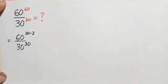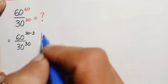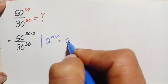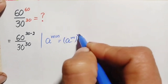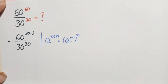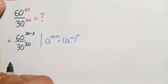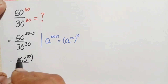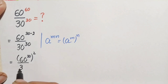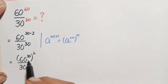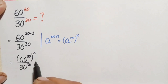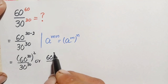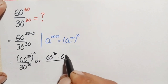We use the identity: a raised to power m times n equals a raised to power m, all raised to power n. Applying this to the numerator, the expression becomes 60 raised to power 30, all raised to power 2, divided by 30 raised to power 30. Since the square is over this number, the numerator becomes 60 raised to power 30 times 60 raised to power 30.